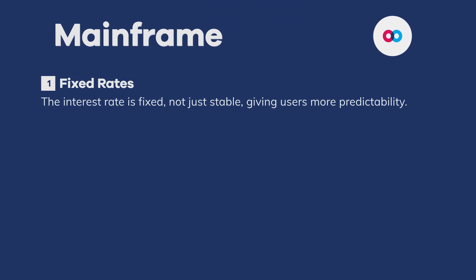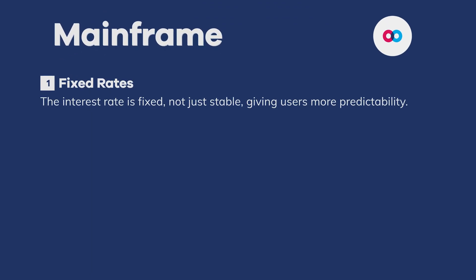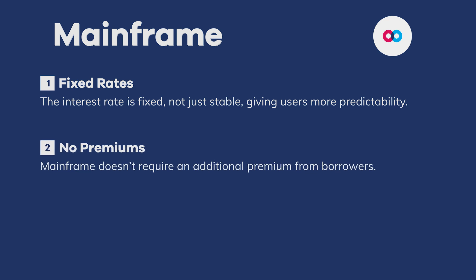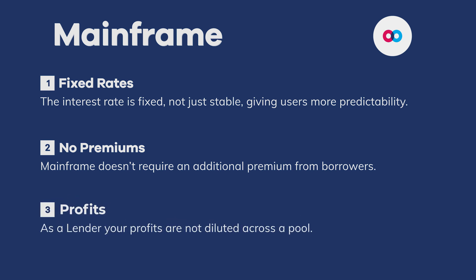So you might be asking yourself, how does Mainframe's fixed rate loans differ? Well, it comes down to three things. First, Mainframe uses fixed rate loans, not stable, so borrowers and lenders get additional predictability. Second, borrowers don't have to pay an additional premium for this predictability. And finally, as a lender, your profits aren't diluted across a pool. This higher capital efficiency results in increased earnings for lenders and lowered costs for borrowers.